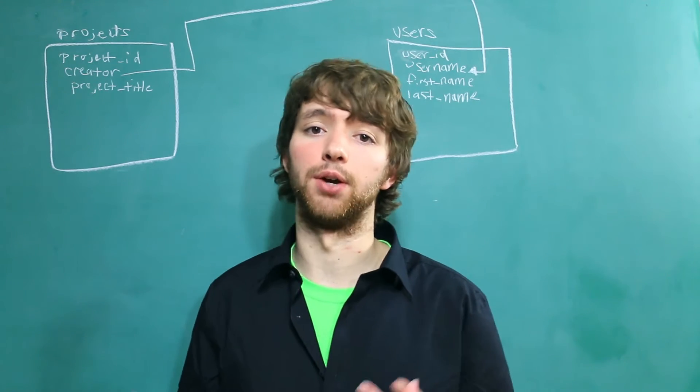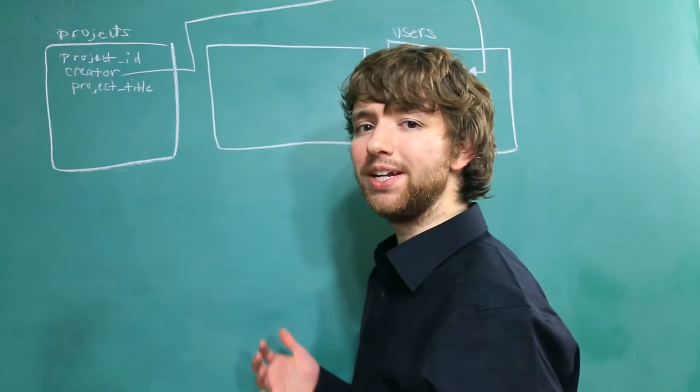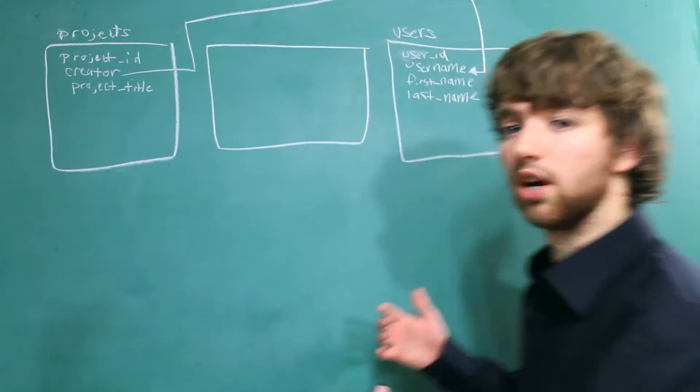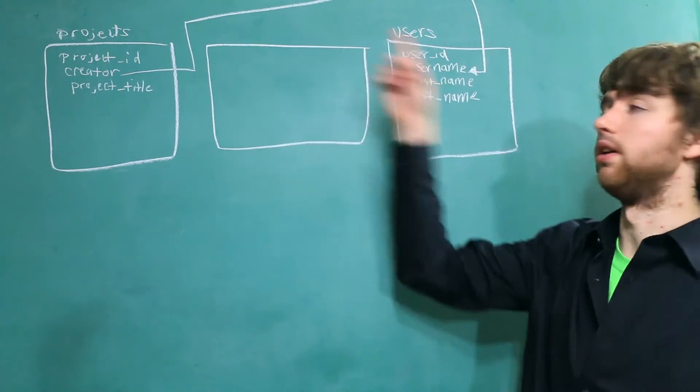That calls for an intermediary table. Now the intermediary table name, by convention, is just a combination of this table and this table. So you can pick one to be singular and the other one's going to be plural.